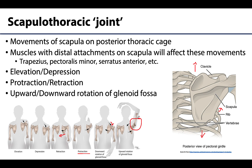Muscles with a distal attachment on the scapula play the biggest role in these scapular movements, including many we've discussed earlier such as the trapezius and pectoralis minor. The serratus anterior is a very powerful muscle for this region. These movements of the scapula really play a role in terms of increasing that overall range of motion.